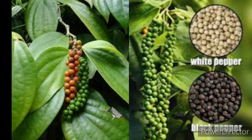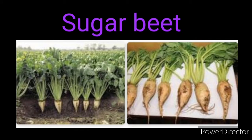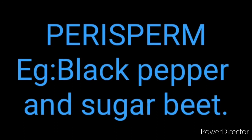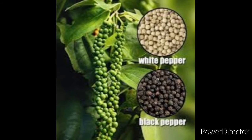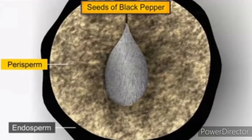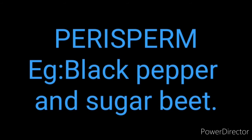Occasionally, in some seeds such as black pepper and sugar beet, the remains of the nucellus are also persistent. The perisperm is the nutritive tissue present outside the embryo sac, functionally similar to the endosperm. Perisperm is diploid as it is developed from the nucellus by mitosis, while endosperm is triploid. Examples are sugar beet, coffee, and black pepper. The residual persistent nucellus is called perisperm.